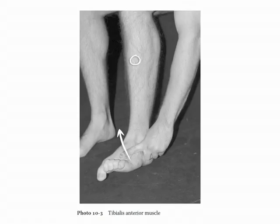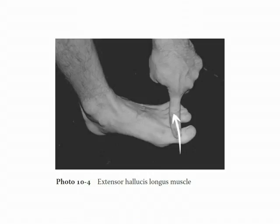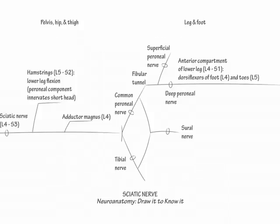Then dorsiflex your great toe and then your remaining digits to demonstrate the actions of extensor hallucis longus and extensor digitorum longus, respectively. The action of extensor digitorum brevis is difficult to distinguish from that of extensor digitorum longus. Wiggle your toes to palpate the extensor digitorum brevis muscle belly on the lateral dorsum of your foot.